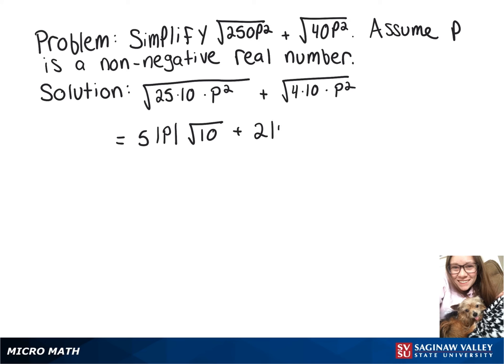Now, on our other one, square root of 4 is 2, square root of p squared, again, absolute value of p, still left with the square root of 10.